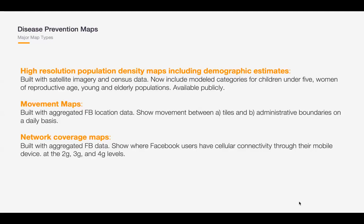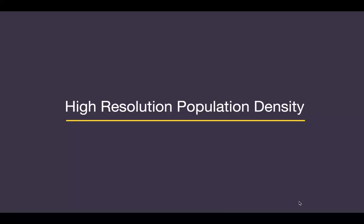Similarly to our work on disaster maps, we're also kicking off network coverage maps for disease outbreaks, which show where Facebook users have cellular connectivity through their mobile phones. We hope this can help organizations doing digital outreach for public health to better reach communities with internet access. Without further ado, I'll kick it over to Murdad to tell us more about the high resolution population density maps, including demographic estimates.